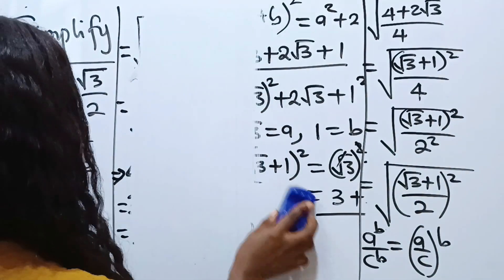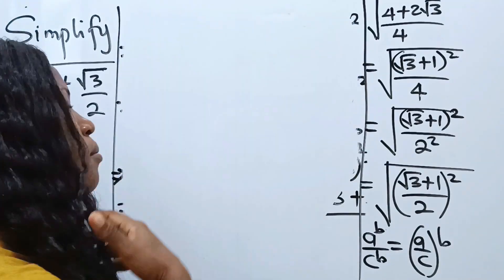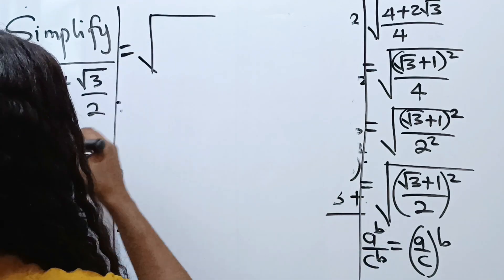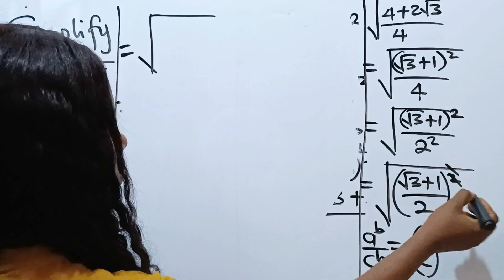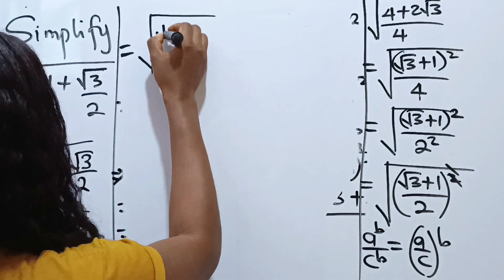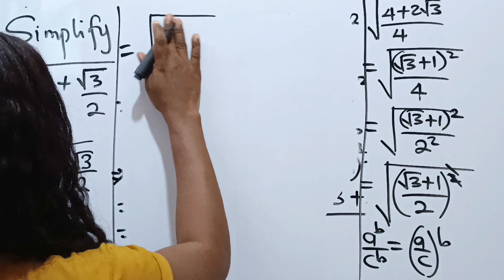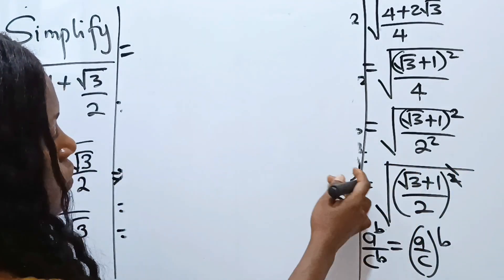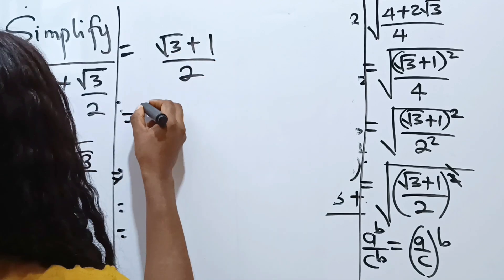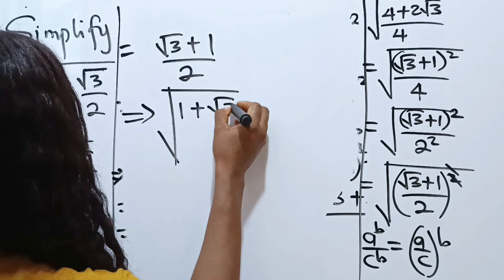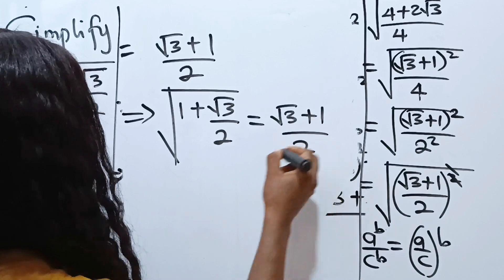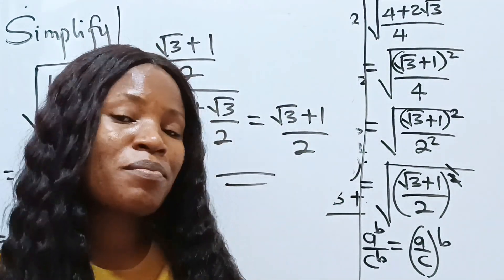Now the square root and the square cancel each other. What we have left is (root 3 + 1) divided by 2. So this implies that the square root of (1 + root 3 divided by 2) simplifies to (root 3 + 1) divided by 2. That is the simplified result.